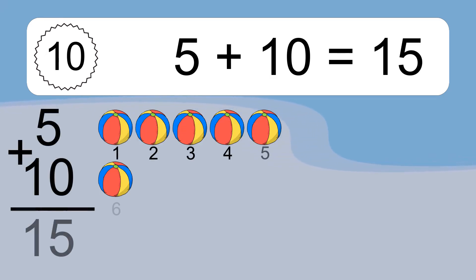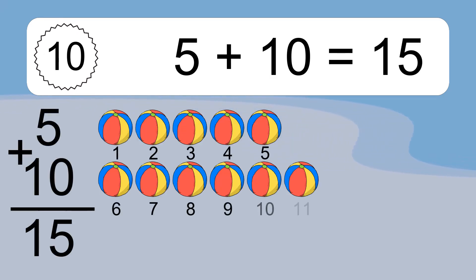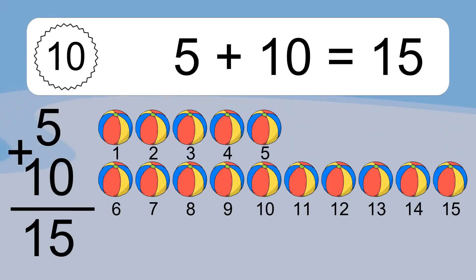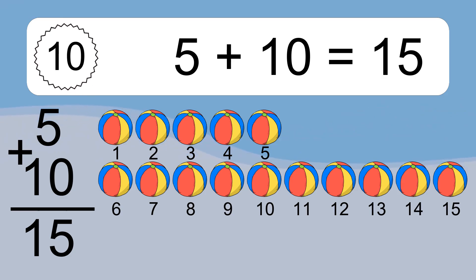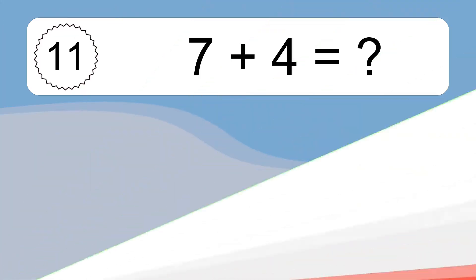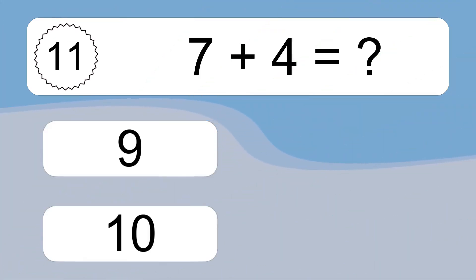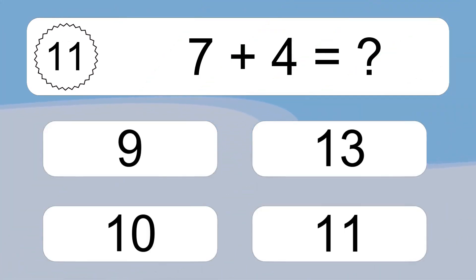5 plus 10 equals what? 5 plus 10 equals 15. Let's count it. 1, 2, 3, 4, 5, 6, 7, 8, 9, 10, 11, 12, 13, 14, 15.